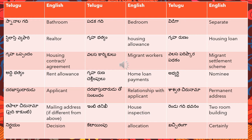This phrase appears especially in application forms, like for opening a bank savings account. The form will mention whether your mailing address is different from the above or different from the permanent address. 'Paidi kakunte' means if different from above. 'Tapala chirunama' means mailing address.